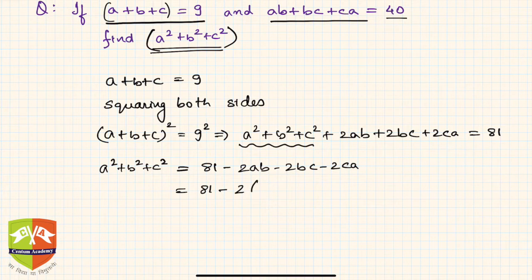If I take a 2 common, minus 2 common, so it will be ab plus bc plus ca. Which reduces our effort to almost nil now.